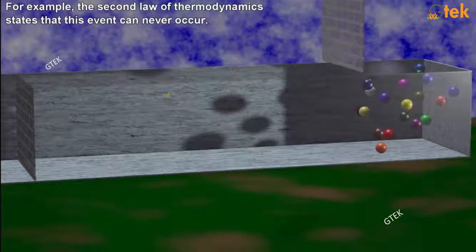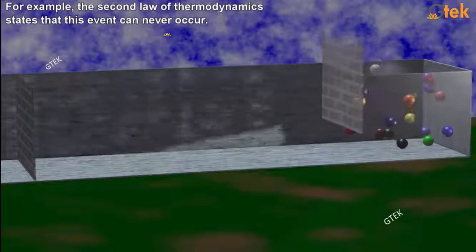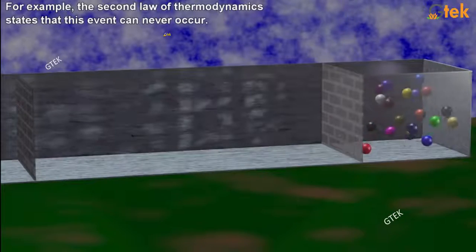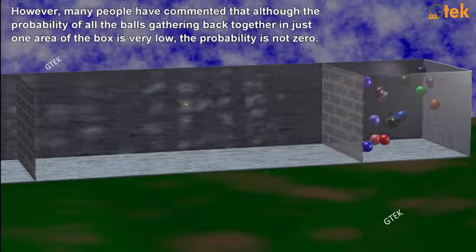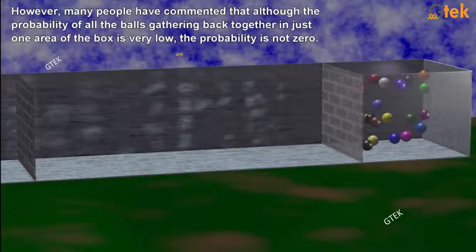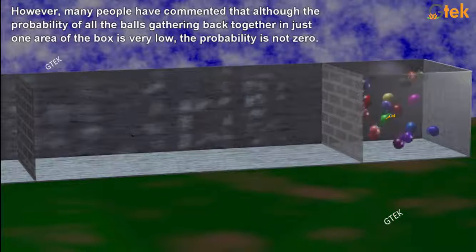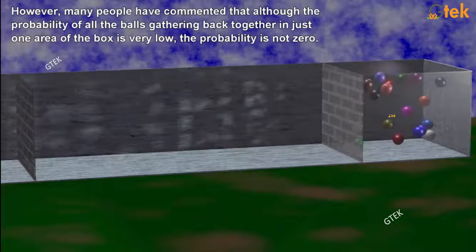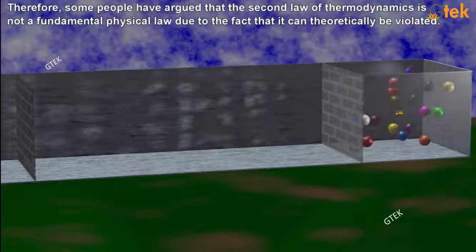Let's discuss the second law of thermodynamics. The second law states that an event which occurred won't occur once again. This event can never occur. I got a set of balls enclosed here.